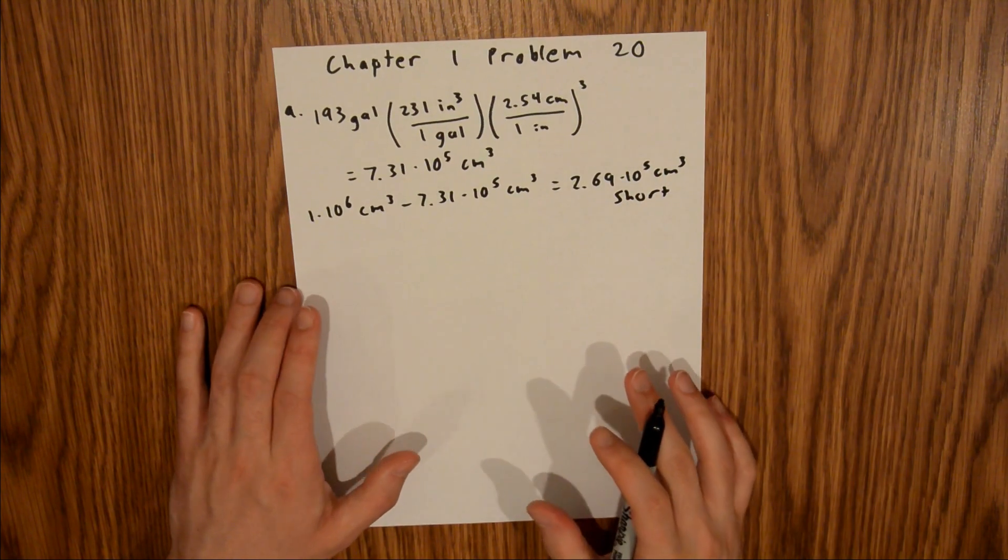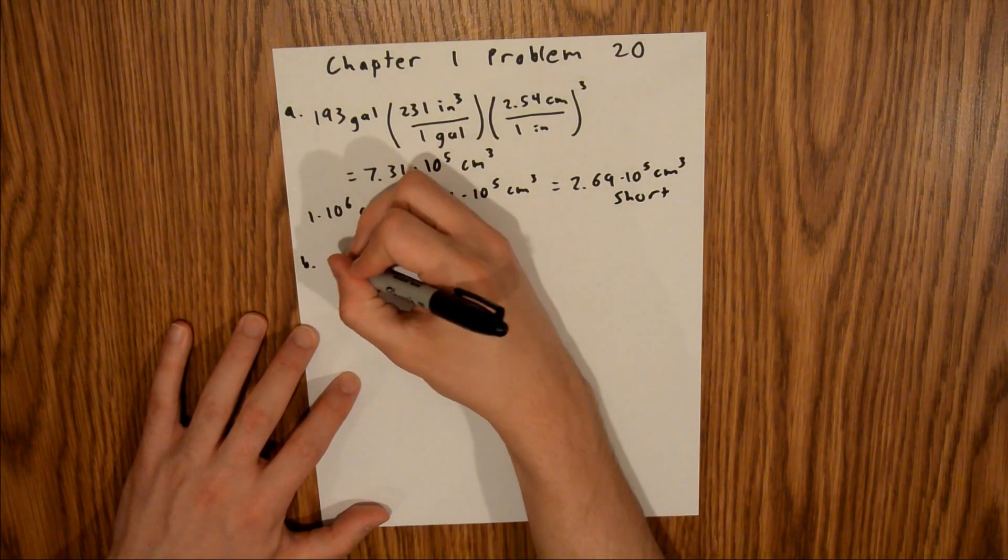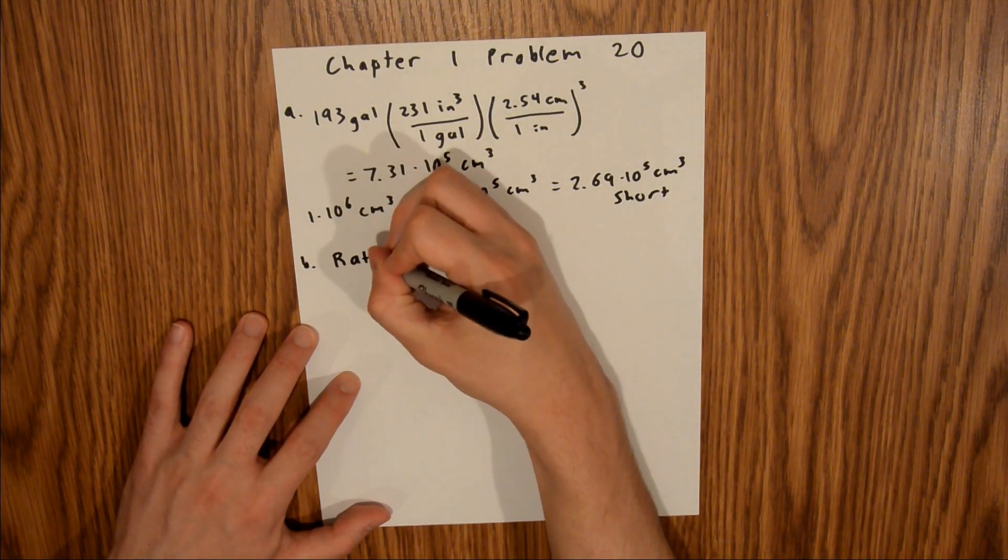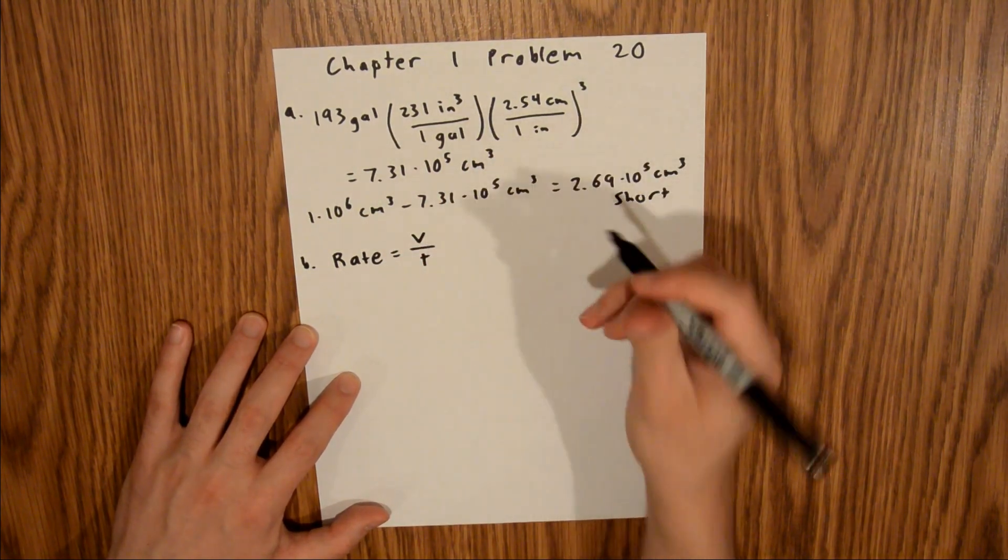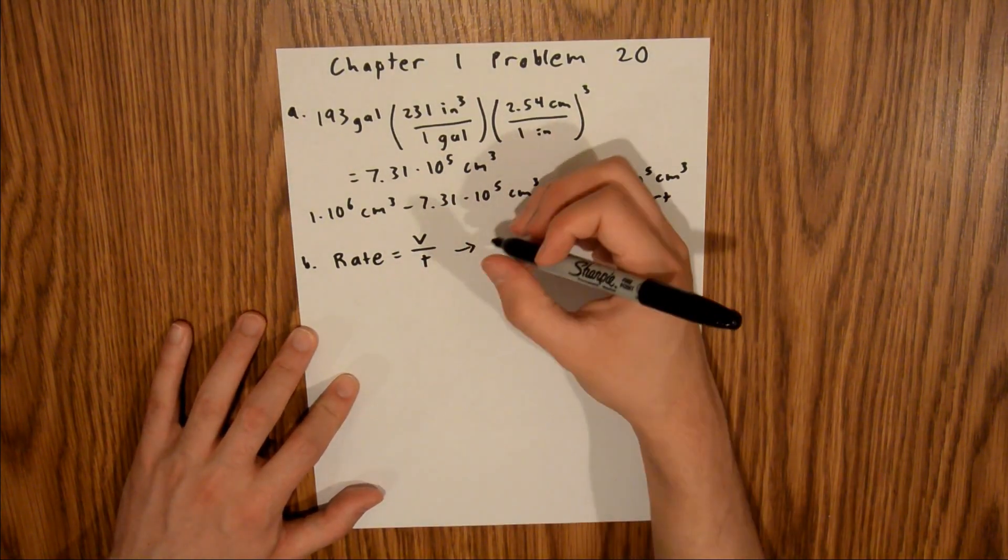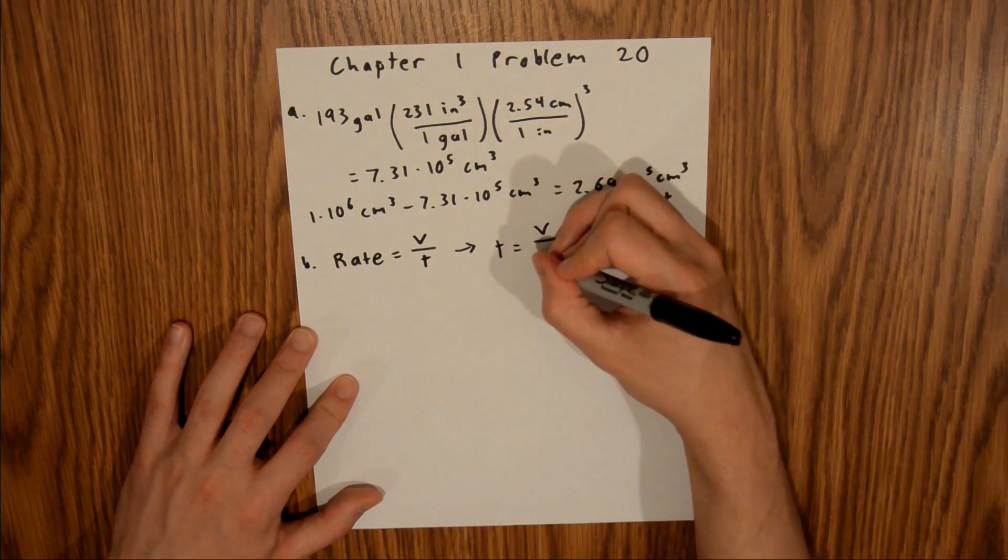And that's it for Part A, and now for Part B, so we know that rate is equal to volume per time, and so if we rearrange this, time is equal to the volume over the rate.